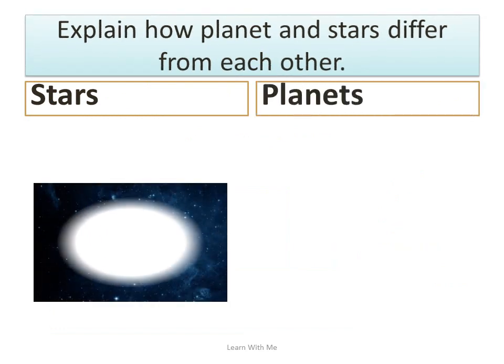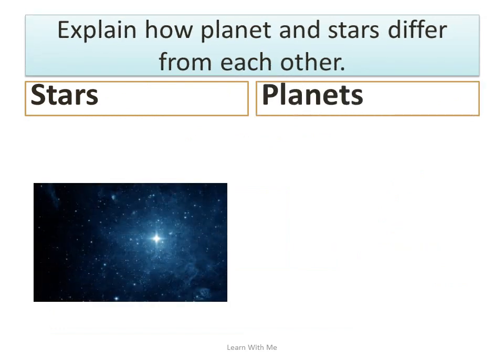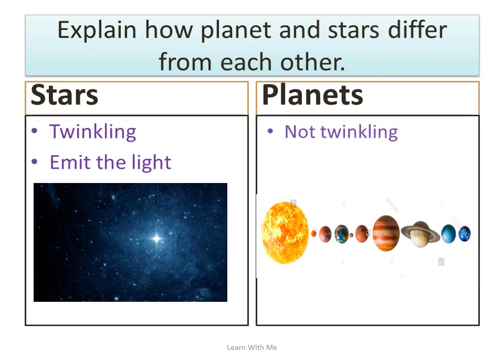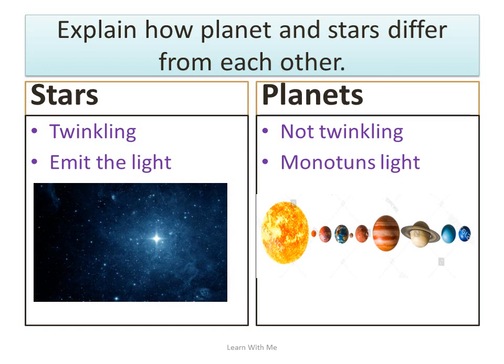Now we discuss about how planets and stars differ from each other. Stars are twinkling but planets are not twinkling. Stars are emitting light but planets are reflecting the light of the Sun.